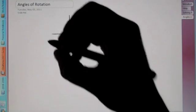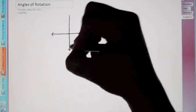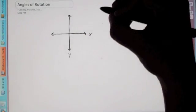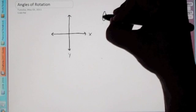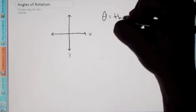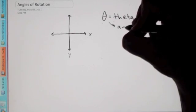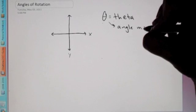The thing you need to know when we're talking about angles of rotation is, first of all, when you start an angle, by the way, we're going to be using this, it's called theta. This just means angle measure.